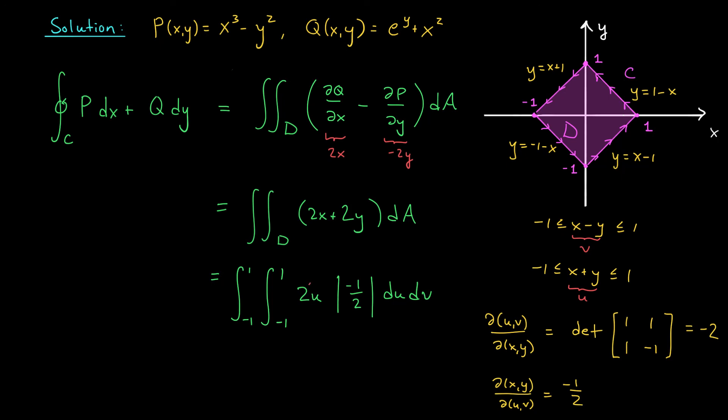Well, the 2 and the 1/2 are going to cancel. We have the integral from -1 to 1 dv times the integral from -1 to 1 of u du, and it's not too hard to check that this gives a value of 0.